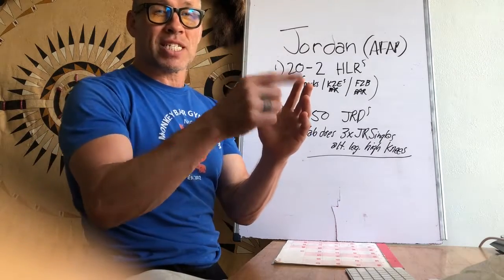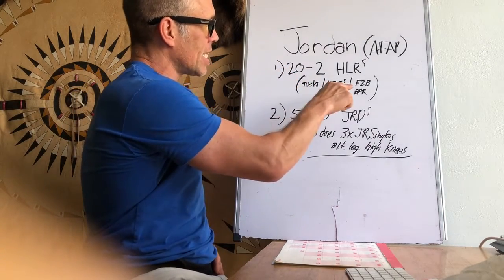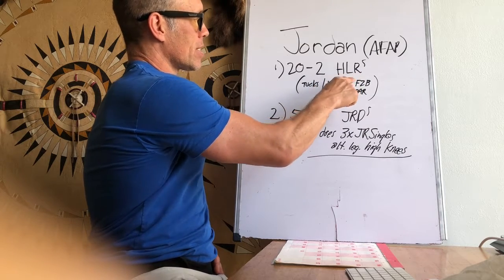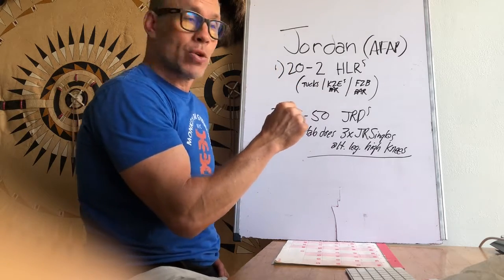If it said 20 to 1, that means every single rep all the way down to 1, but this says 20 to 2, so you're descending in hanging leg raises. Stability level, you're gonna do seated tucks on the floor. Watch the video if you don't know how to do it.